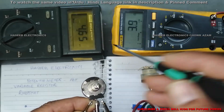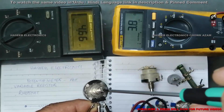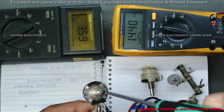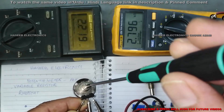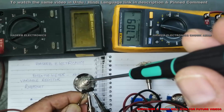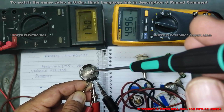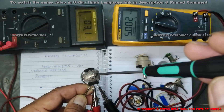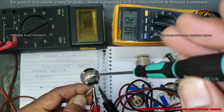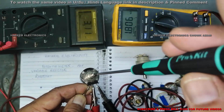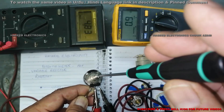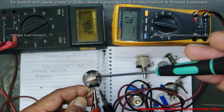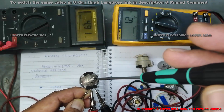Now I will reverse this position. Here is zero and here is 5k; returning back, here is 5k and here is one ohm.